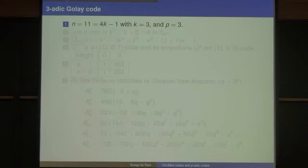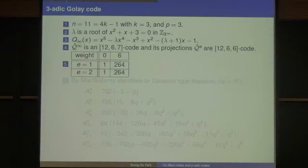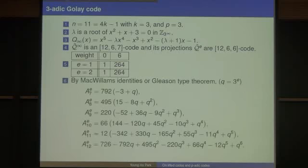The binary quadratic residue code has minimum distance 5, but the finite projections have minimum distance 4. So all we need are the weight counts for D equals 4, and it is easy to compute this. This determines every other coefficient, giving you all the numbers of codewords of weight 5, 6, 7, 8 in every Z/p^e. For the ternary (3-adic) Golay code, lambda and the formula for Q_infinity give a (12, 6, 7) code, and the minimum distance of the finite projection is 6.